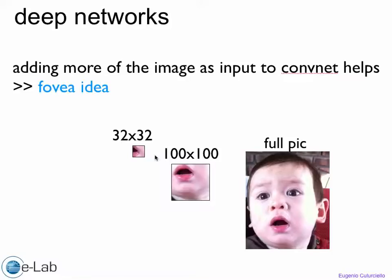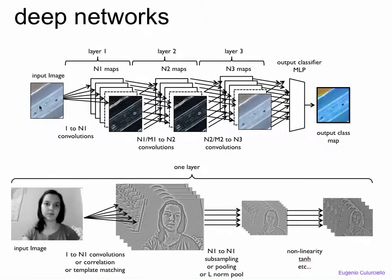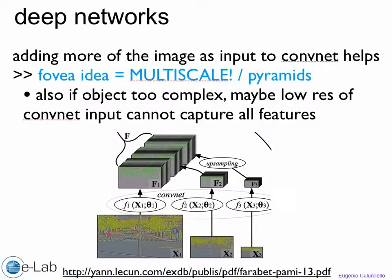Imagine that you have a convnet like this one. Instead of having just one input image, you could have three input images at three different scales—smaller portion of this, a bigger portion, and even bigger portion going in. This is really the fovea idea, sort of a multi-scale pyramid.